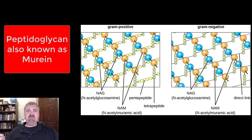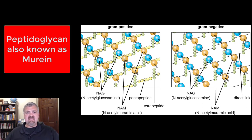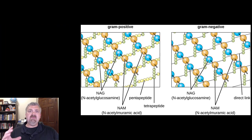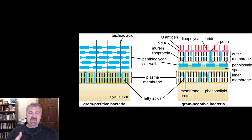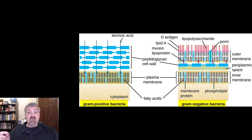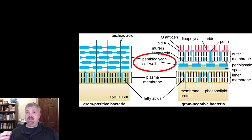Another term for peptidoglycan is murein — I'll put that on screen so you know how to spell it. If you ever see murein, it means the same thing. Now here we're seeing a comparison of gram-positive and gram-negative bacteria — they both have a peptidoglycan cell wall, but they're wildly different.